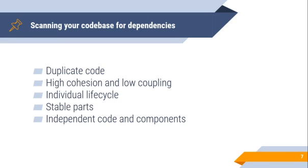Independent code and components. Whenever code and components are independent and unrelated to other parts of the system, they can potentially be isolated to a separate component and dependency. You can use a variety of tools to assist you in scanning and examining your code base. This ranges from tools that scan for duplicate code and draw a solution dependency graph, to tools that can compute metrics for grouping and cohesion.